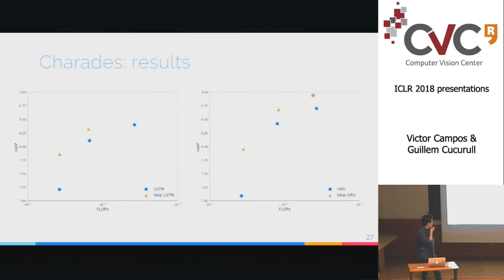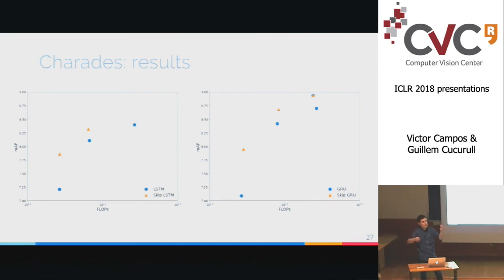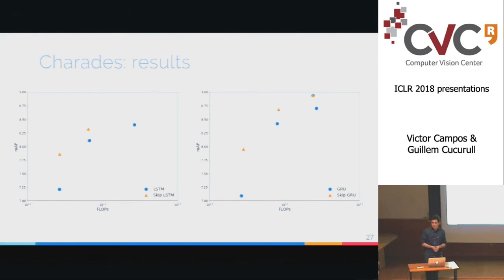On handling noisy data: if the data is not useful for prediction, the model usually learns to skip it. In the synthetic addition task from the original LSTM paper — where you have a sequence of numbers and binary flags marking which two to add, with the rest being dummy — if dummy regions are placed in known locations, the model learns to skip them entirely. So yes, if some values are non-discriminative or noisy, the model can learn to skip them.